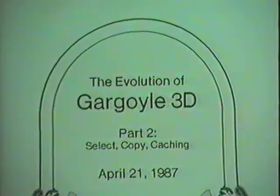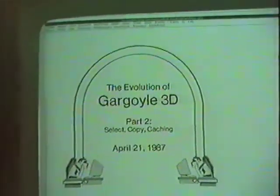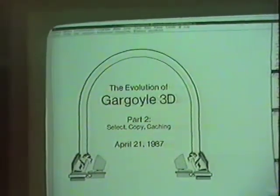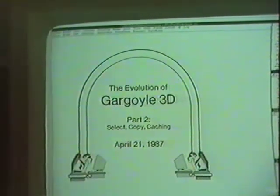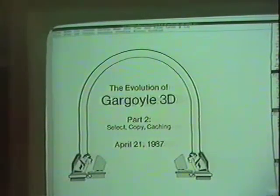This is part two of the evolution of Gargoyle 3D, a series of videotapes showing the progress in the software development of an interactive three-dimensional illustration system. In this part, I show the new developments in selection, copying, and refresh caching.